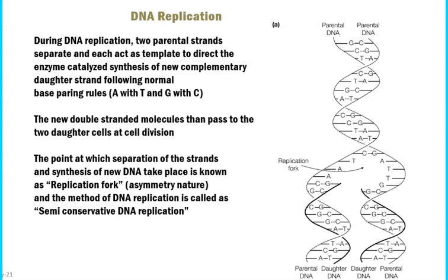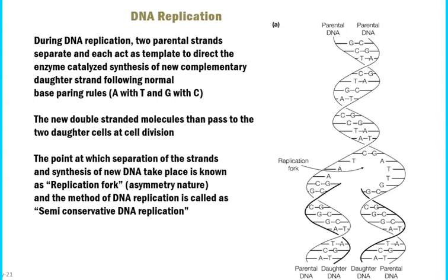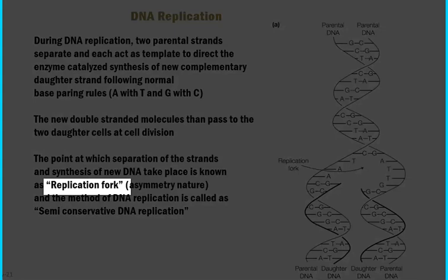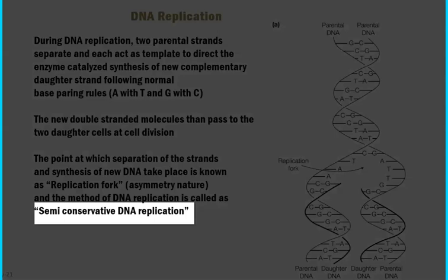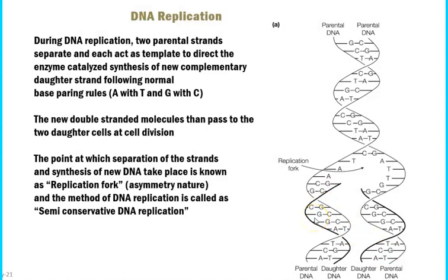Next, we look at a specific structure: the replication fork. The replication fork is the point at which separation of the two strands and synthesis of new DNA takes place. The replication fork is always asymmetric in nature. As already mentioned, the type of replication in living organisms is mainly semi-conservative — meaning one parental strand is conserved in each daughter cell, with one parental strand and one daughter strand entering each daughter cell. That is why it is referred to as semi-conservative DNA replication.